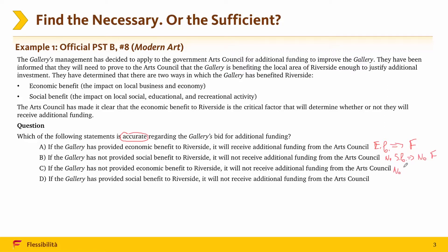Option C: If the gallery has not provided economic benefit to Riverside, it will not receive additional funding from the Arts Council. Option D: If the gallery has provided social benefit to Riverside, it will not receive additional funding from the Arts Council.